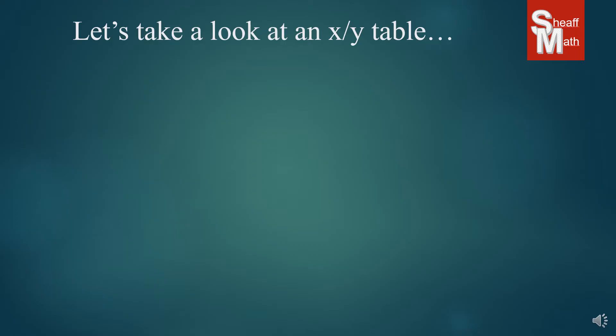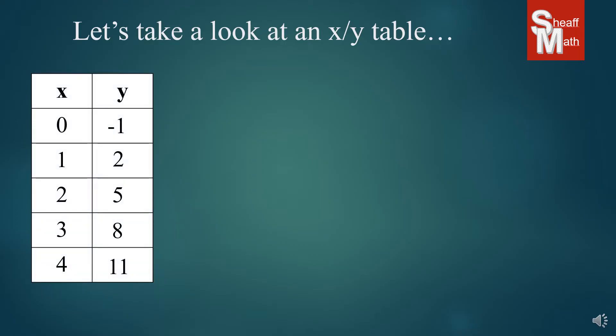So let's take a look at an xy table, what it is. It's where you have x and y, and here we have five points. Our x's go by ones, which is a good thing. We'll talk about that later: 0, 1, 2, 3, 4.